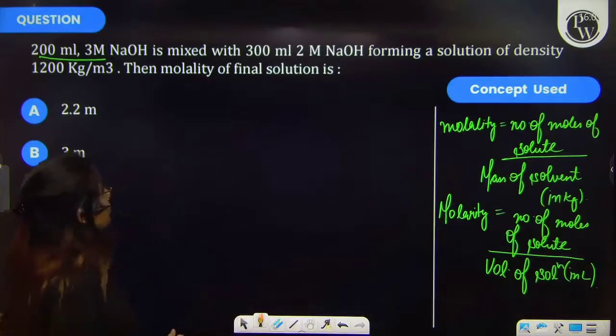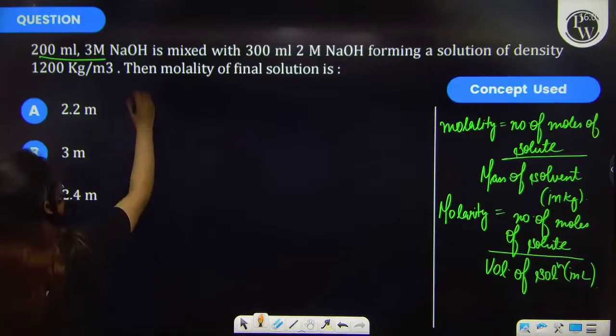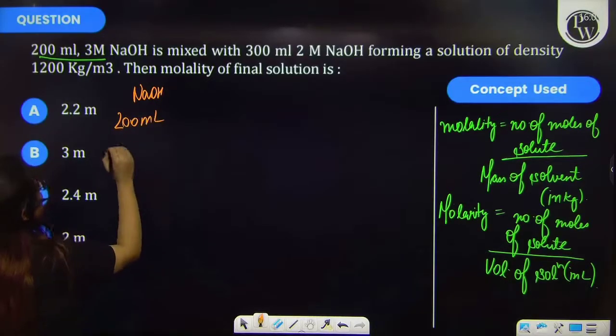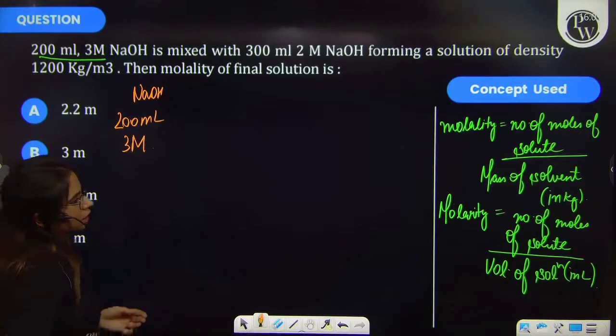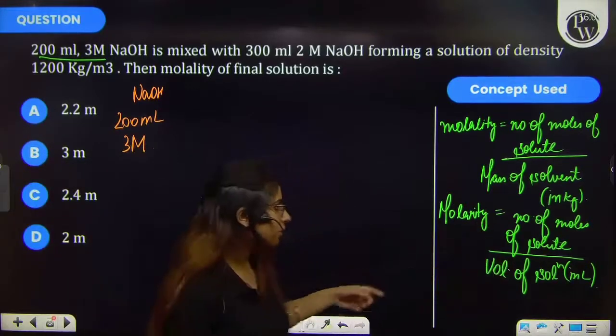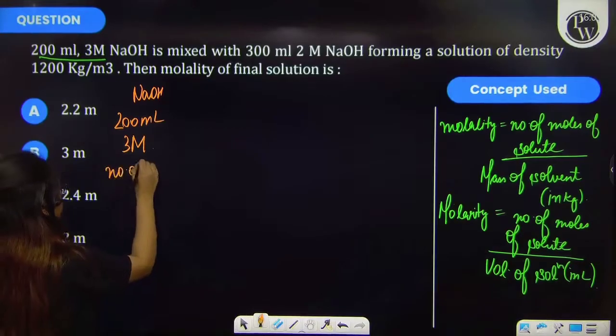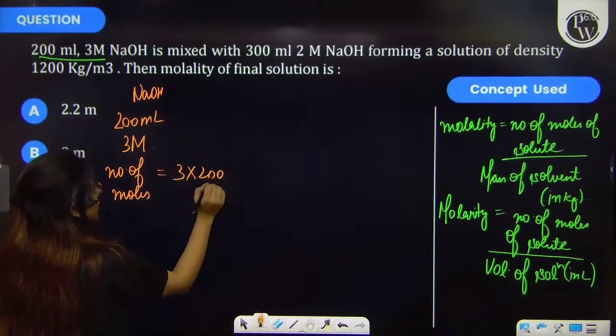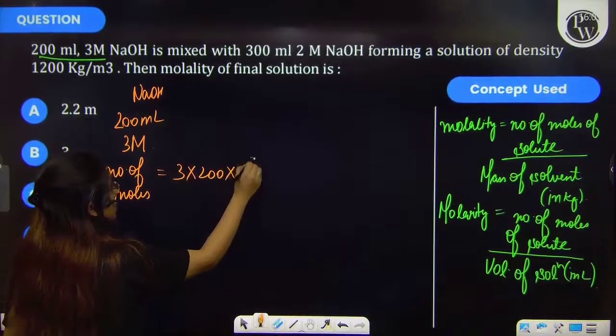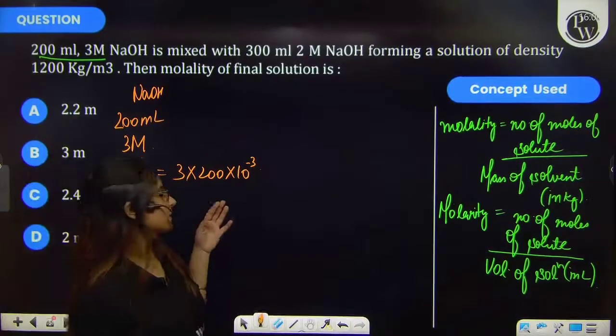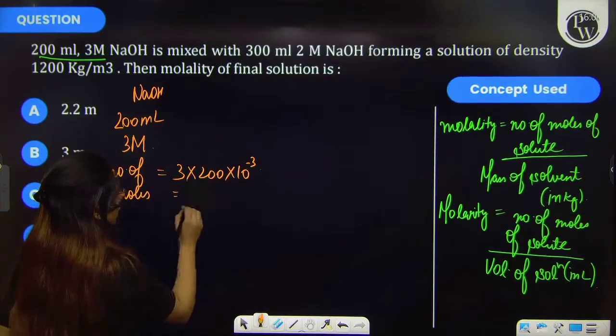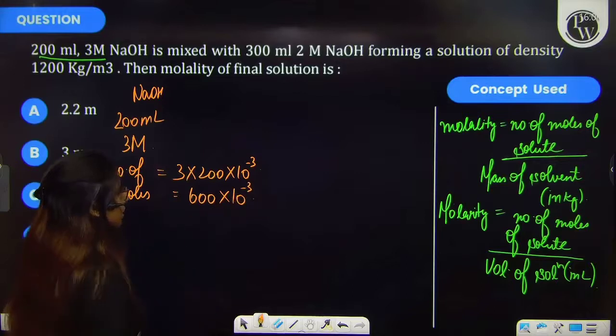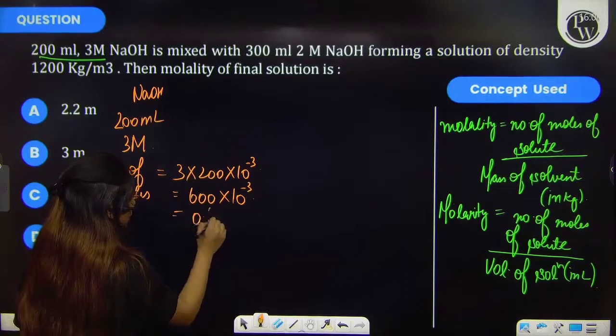So firstly, we have been provided with these two solutions of NaOH. Now, by putting the value in this formula, you will be getting number of moles of NaOH to be 3 into 200 into 10 raised to the power minus 3 because these are in milliliters. Then it will come out to be 600 into 10 raised to the power minus 3, or it may be written as 0.6.